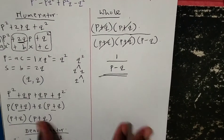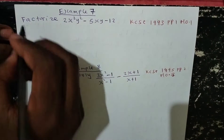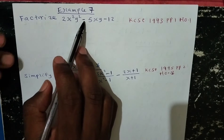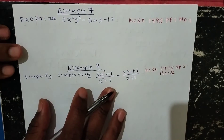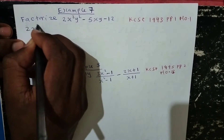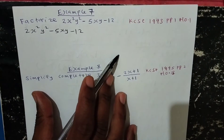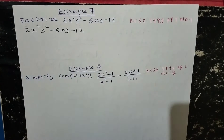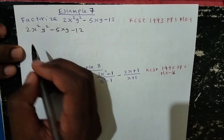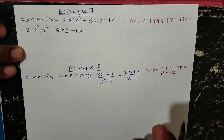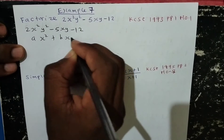Now we look at example 7: factorize 2x squared y squared minus 5xy minus 12. These are past case questions from 1993, paper 1, question number 1. Rewriting the equation: 2x squared y squared minus 5xy minus 12. This is a quadratic equation because it has two variables, one of which is squared and the other is not, plus a constant term.